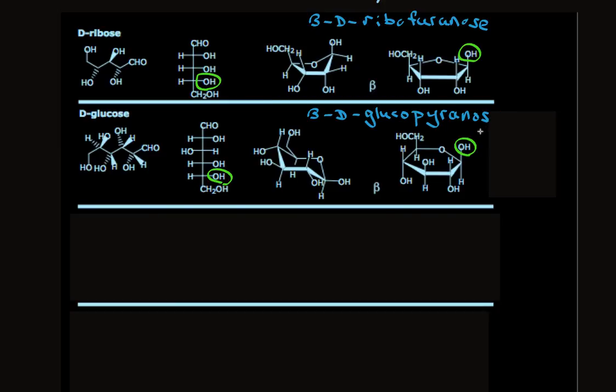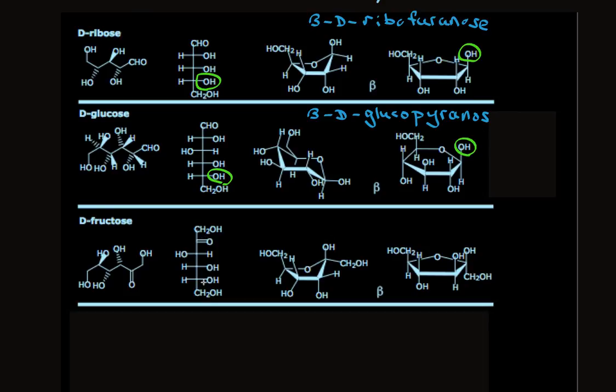This works for ketoses also. Take a look at fructose. We've memorized this pattern as fructose. It has a ketone carbonyl at the second carbon. And beyond that, it has the same stereochemical pattern as glucose. This particular one has hydroxyl group on the right, so it's D.